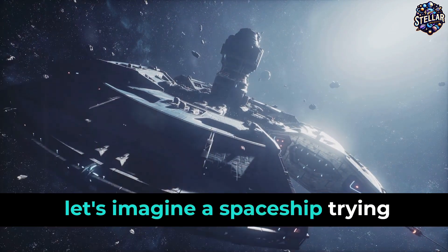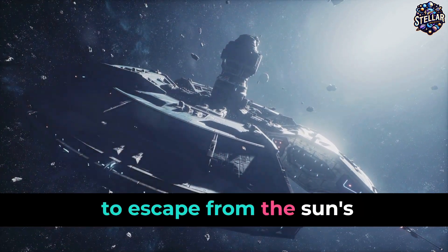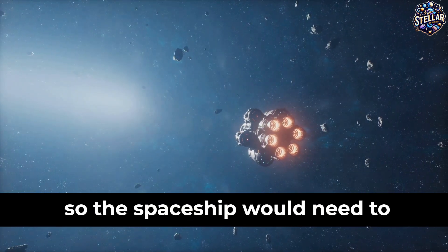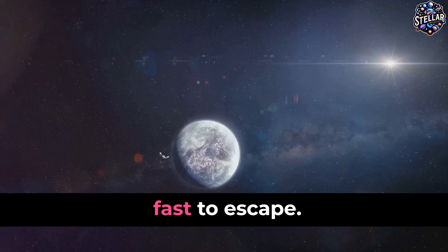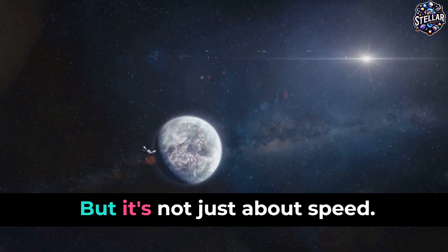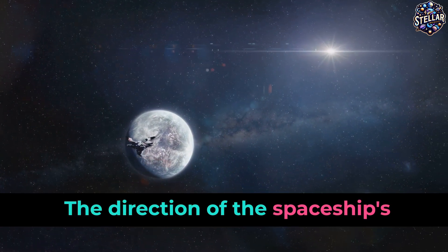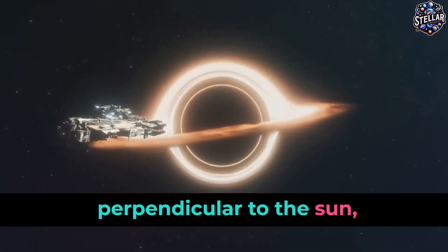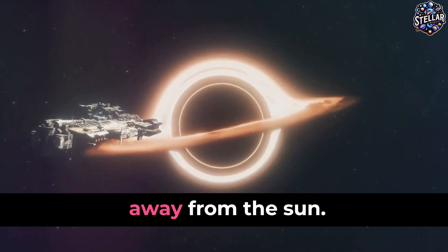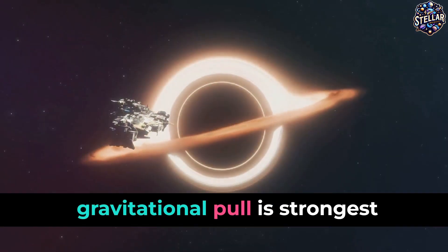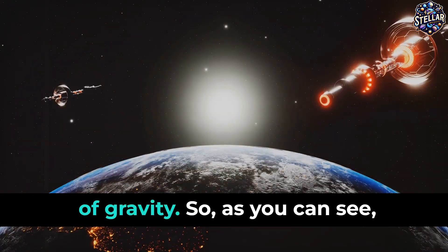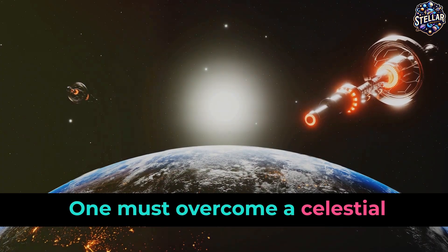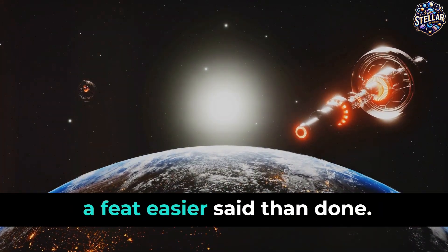Now, let's imagine a spaceship trying to escape from the sun's gravitational pull. Remember, the sun's gravity is 28 times stronger than Earth's, so the spaceship would need to be going incredibly fast to escape. But it's not just about speed. The direction of the spaceship's movement is also crucial. If the spaceship is moving perpendicular to the sun, it will have a harder time escaping than if it were moving away from the sun. This is because the gravitational pull is strongest in the direction of the source of gravity. So as you can see, space travel isn't as simple as just going up. One must overcome a celestial body's gravitational pull, a feat easier said than done.